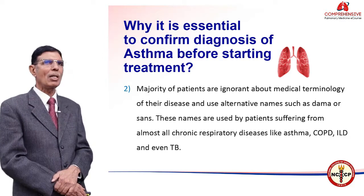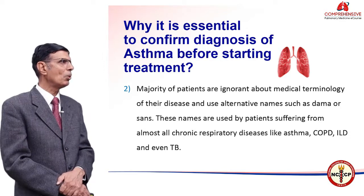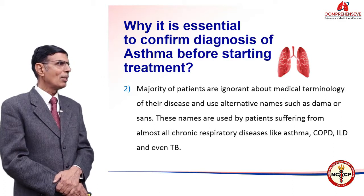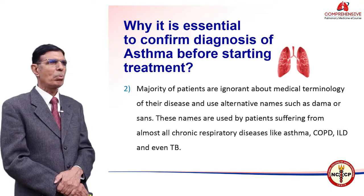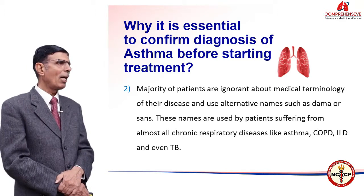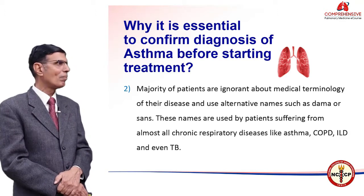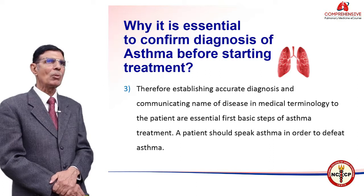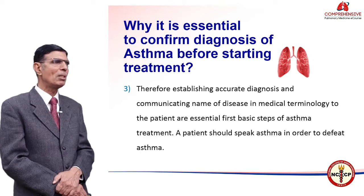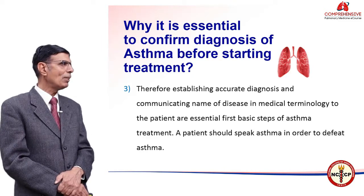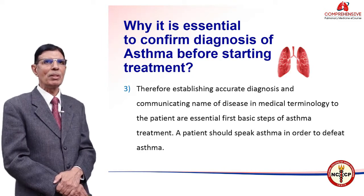Majority of patients are ignorant about the medical terminology of their disease and use alternative names like 'Dhamma' or 'Sans'. These names are used by patients suffering from almost all respiratory diseases like asthma, COPD, ILD, and even some patients of TB. Establishing an accurate diagnosis and communicating the name of the disease in medical terminology to patients are the essential first basic steps of asthma treatment. A patient should speak 'asthma' in order to defeat asthma.